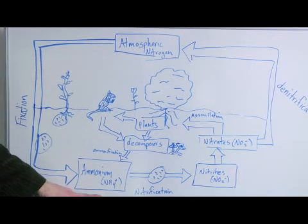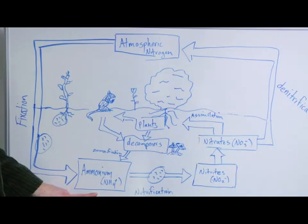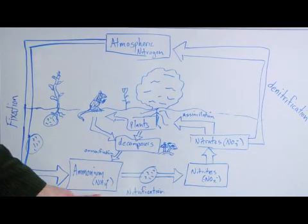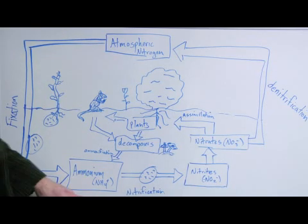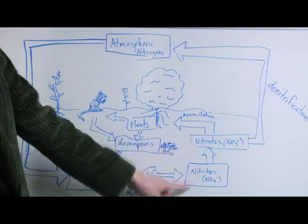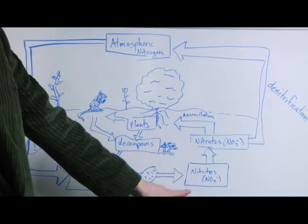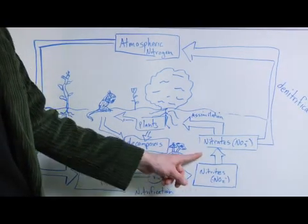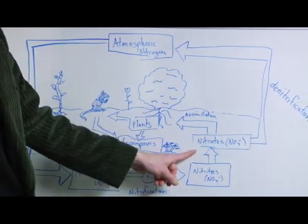From this step, ammonium can be used by plants, but it also goes through another process called nitrification, which essentially means that ammonium is changed by bacteria again into nitrites and then into nitrates. The reason it can't stop at nitrites is that nitrites when they build up in the soil become toxic for plants. So they have to go all the way into a usable form, nitrate.